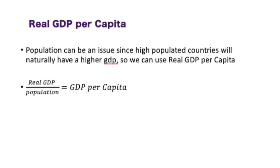Another problem we could run into is that some countries are very populated, so it's hard to say if they naturally have a high GDP or if they have a high GDP because they have so many people. A good way to get around this is to use GDP per capita — you simply take the real GDP and divide it by population, and that gives you GDP per capita, which tells you how much per person is producing in their country.